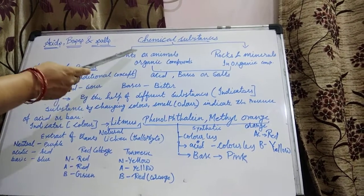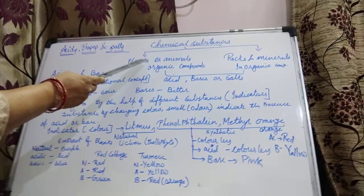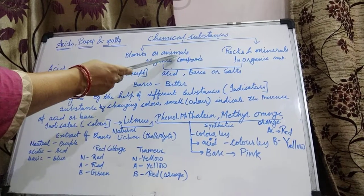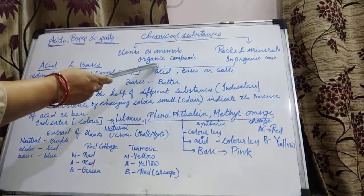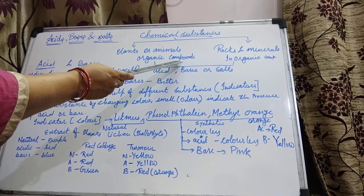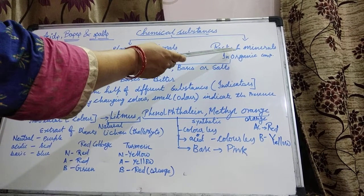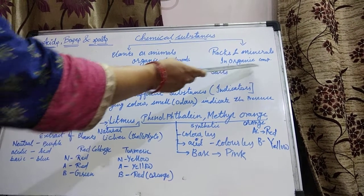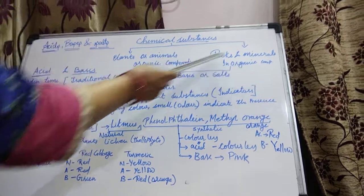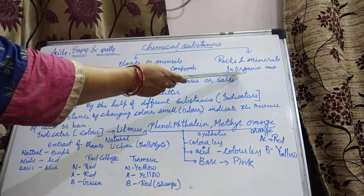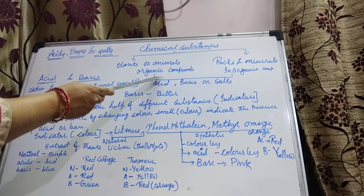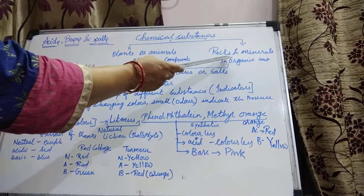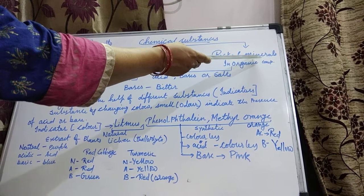One more thing I am telling you: if the chemical substance we are obtaining is from a living organism, like plants or animals, those substances are organic compounds. While if we are getting the compounds from rocks or minerals, they are inorganic compounds. So organic means derived from plants or animals, and inorganic means derived from rocks or minerals.